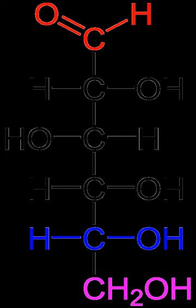Monosaccharides are the simplest carbohydrates in that they cannot be hydrolyzed to smaller carbohydrates. They are aldehydes or ketones with two or more hydroxyl groups. The general chemical formula of an unmodified monosaccharide is (CH2O)n, literally a carbon hydrate. Monosaccharides are important fuel molecules as well as building blocks for nucleic acids. The smallest monosaccharides, for which n equals 3, are dihydroxyacetone and D- and L-glyceraldehydes.